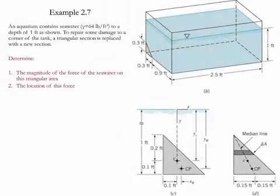Example 2.7. In this example we have an aquarium full of seawater with a depth of about one foot. We need to repair a damaged corner. To do that, we need to find the magnitude of the force that the seawater applies on this triangular area, and we also need to find the location of this particular force.